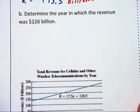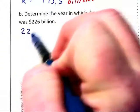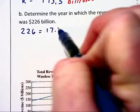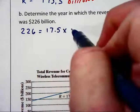In this next part, we are asked to determine the year in which the revenue was 226 billion. This time, the left side of the equation is going to have R substituted in, and we are going to solve for x, the number of years since 2005, on the right-hand side.